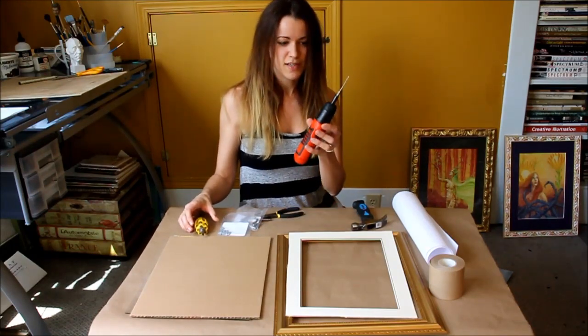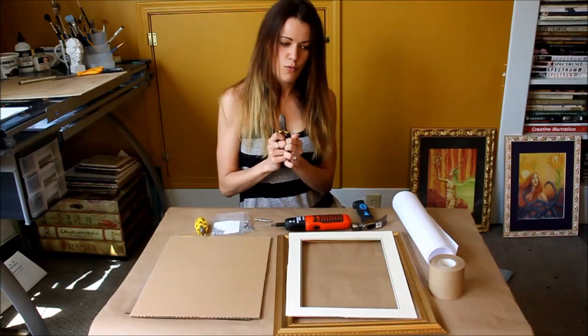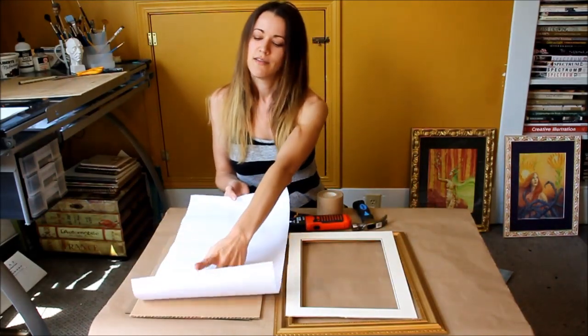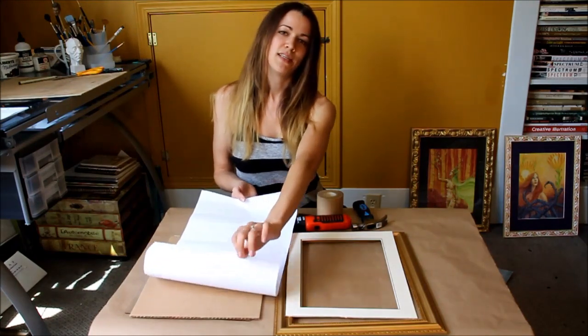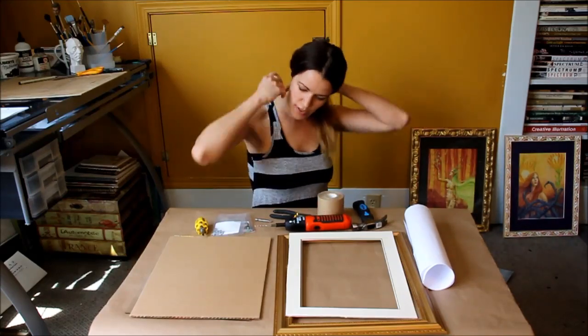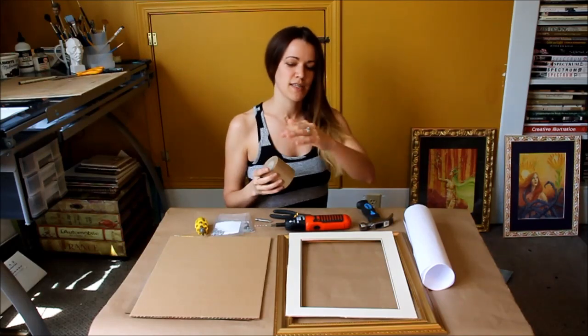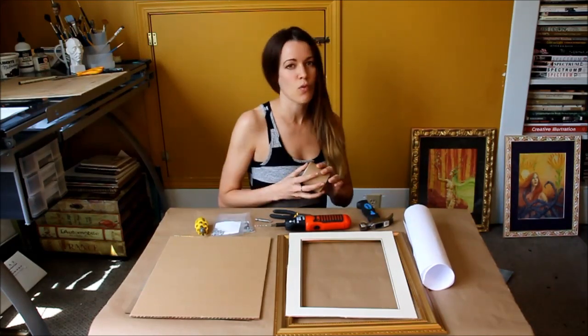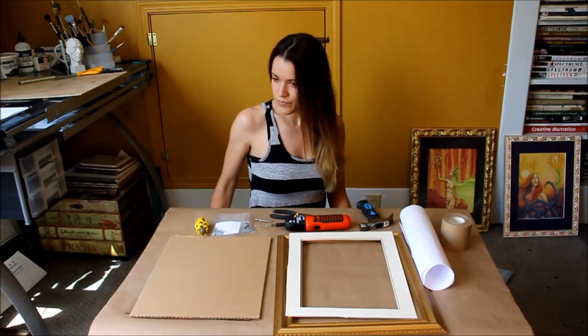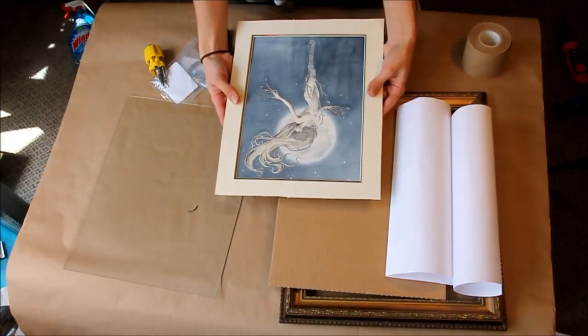Screwdriver, a little drill to do the pilot holes, wire cutters, and this is acid-free paper that you can put behind the painting, in between the painting and the backing cardboard, to stop it from yellowing. And this is tape that you'll use at the very end to cover up everything on the back to make it nice and smooth for the wall. And glass cleaner, of course. I guess that's it, let's get started.